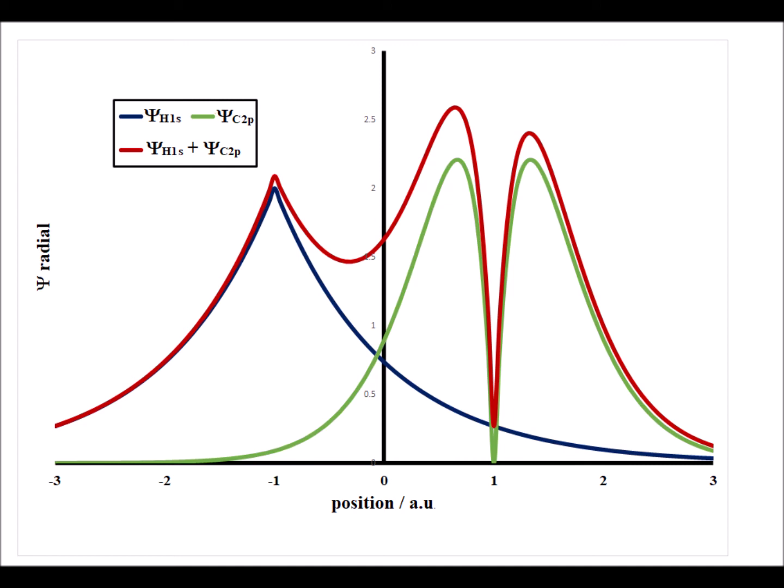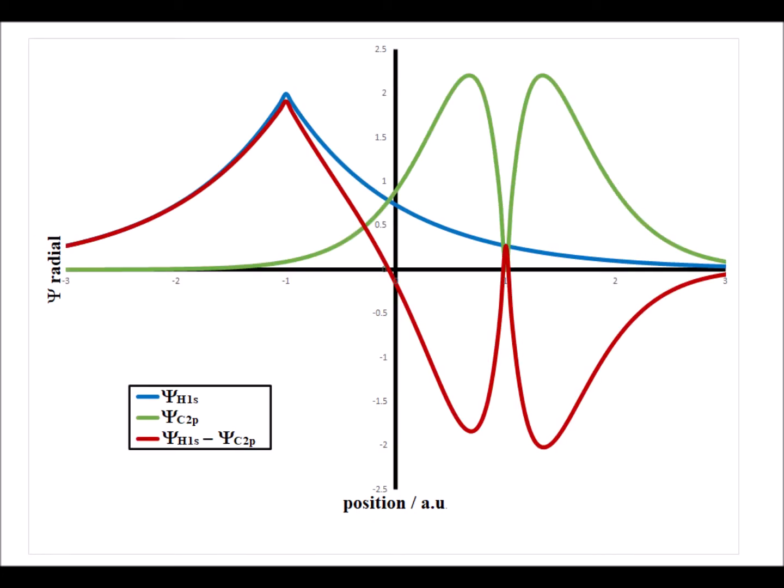Now we look at the overlap between a hydrogen 1s atomic orbital and a carbon 2p orbital. The linear combination — that is, the sigma bonding combination — is shown in red. We see an increase in the wave function between the two nuclei. For the antibonding combination, also shown in red, the wave function drops to zero. We actually have a node in the molecular orbital at the origin, since we have the antibonding combination.